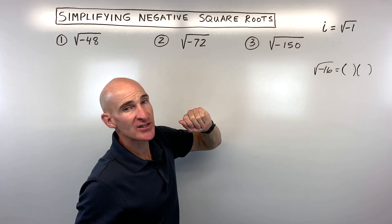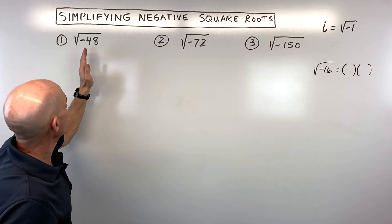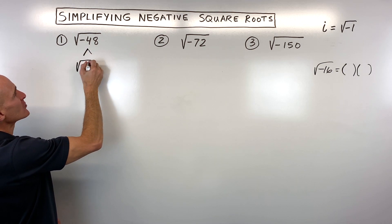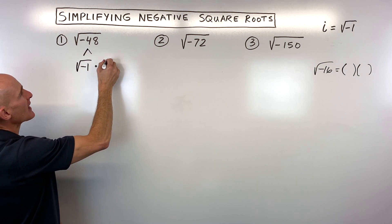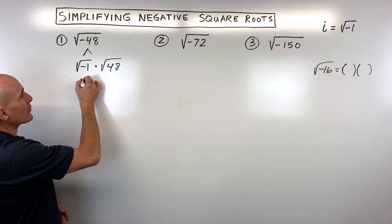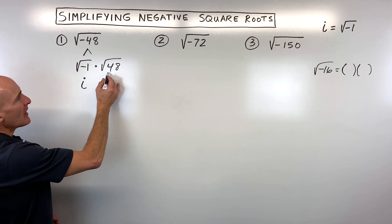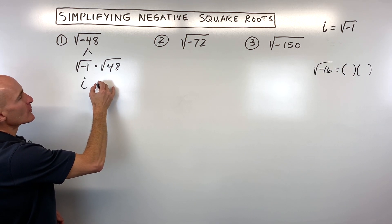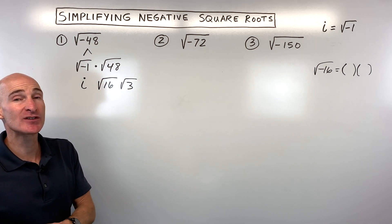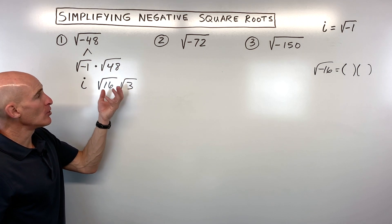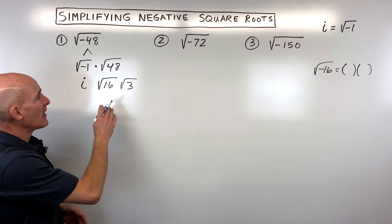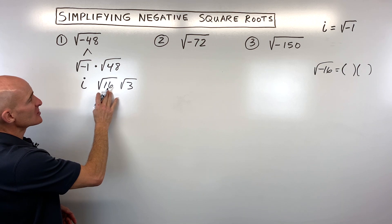Let's take a look at the first example. When we have the square root of negative 48, we can break this down into the square root of negative one times the square root of positive 48. The square root of negative one we represent with the letter i for imaginary. Then the square root of 48 we can break down into 16 times 3. The reason I picked 16 is because it's a perfect square — you try to pull out perfect squares like 4, 9, 16, 25, etc. It's easy to take the square root of 16; that's just going to be 4.